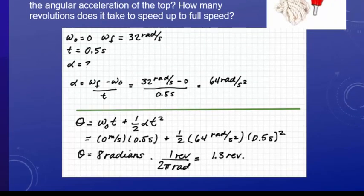Now we want to find out how many revolutions it takes to speed up to full speed. We have an initial angular velocity, the time, and now we have our angular acceleration. We have all of the information to plug into the angle equation: theta equals omega naught t plus one half alpha t squared.